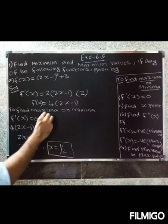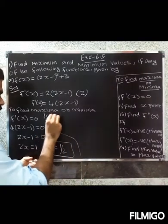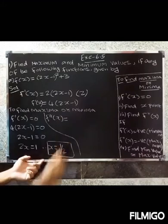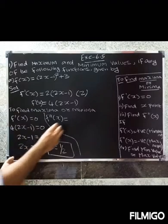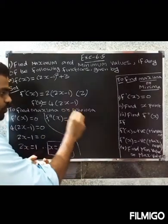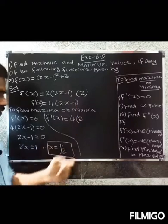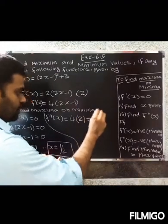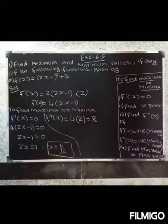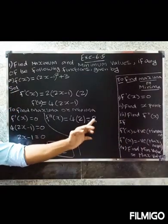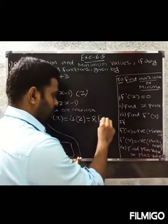Differentiate f'(x) again. f''(x) = 4 × 2 × 1 = 8. The constant term differentiates to zero. So f''(x) = 8. Now check whether f''(x) is positive or negative. Since f''(x) = 8, which is positive, this indicates a minimum.